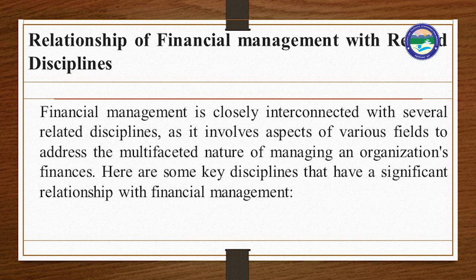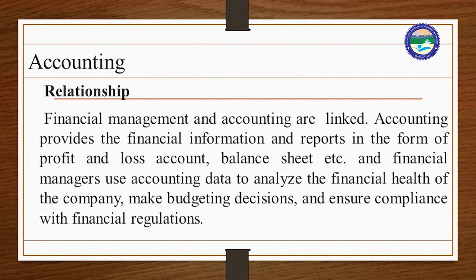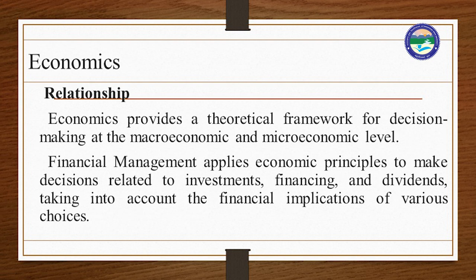Now we will see the relationship of financial management with related disciplines. Financial management is closely interconnected with several disciplines as it involves aspects of various fields to address the multifaceted nature of managing an organization's finances. The first discipline is accounting. Financial management and accounting are linked — accounting provides financial information and reports in the form of profit and loss accounts, balance sheets, etc. Financial managers use accounting data to analyze the financial health of the company, make budgeting decisions, and ensure compliance with financial regulations.